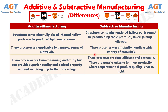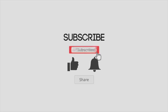Difference number 8. Additive manufacturing processes are time-consuming and costly, but can provide superior quality and desired properties without requiring any further processing. Whereas, subtractive manufacturing processes are time-efficient and economic, and are usually suitable for mass production where the requirement of product quality is not so tight.